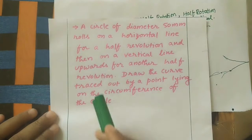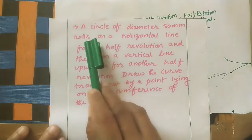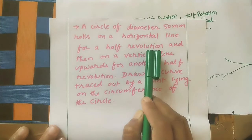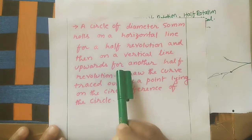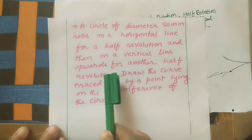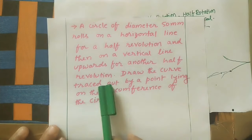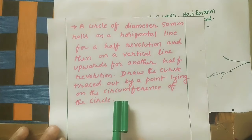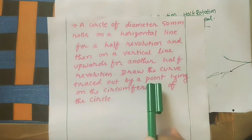Now let us take the given question. A circle of diameter 50 mm rolls on a horizontal line for a half revolution, and then on a vertical line upward for another half revolution. Draw the curve traced out by a point lying on the circumference of the circle. This curve is called a cycloid - half cycloid coming horizontally and remaining half in the vertical.